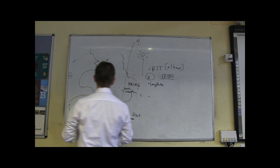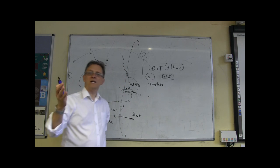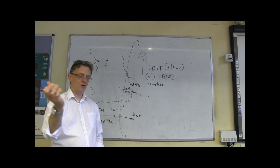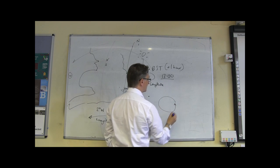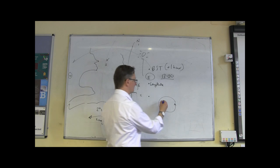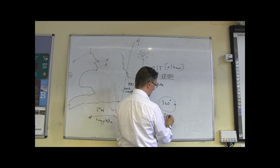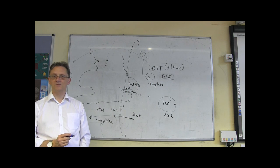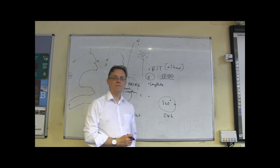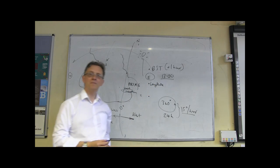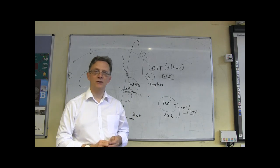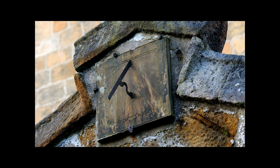Now to work out how much effect this is going to have is pretty easy. The Earth turns 360 degrees in 24 hours. 360 divided by 24 is 15 degrees per hour. If you look at a sundial, the hours are marked roughly 15 degrees apart. The sun takes an hour to do 15 degrees in the sky because it's got to do 360 degrees in 24 hours.